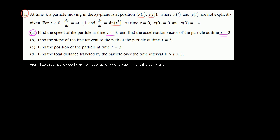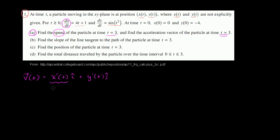The speed is really just the magnitude of the velocity vector. Our velocity vector as a function of time is going to be equal to the derivative of our x position as a function of time — the velocity in the x direction times the i unit vector — plus the velocity in the y direction times the j unit vector. I just wrote this in engineering notation. In this case, x prime of t, they've already given it to us: x prime of t is 4t plus 1. So this is 4t plus 1 times the i unit vector.